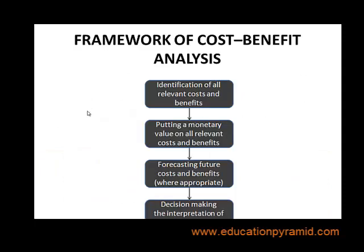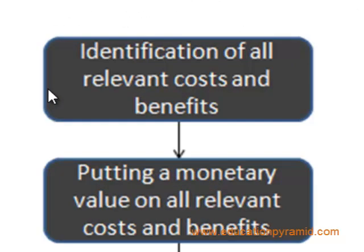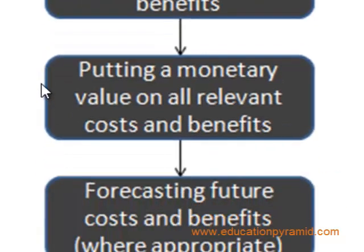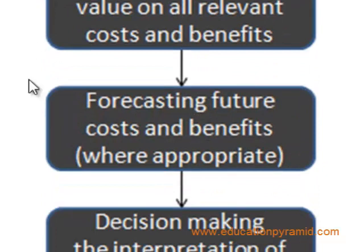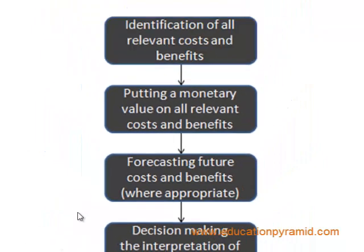In order to do cost benefit analysis, we go through the following steps: identification of all relevant costs and benefits from the projects, putting a monetary value to all relevant costs and benefits, forecasting future costs and benefits where appropriate, and then taking decisions by interpreting the results from the cost benefit analysis.